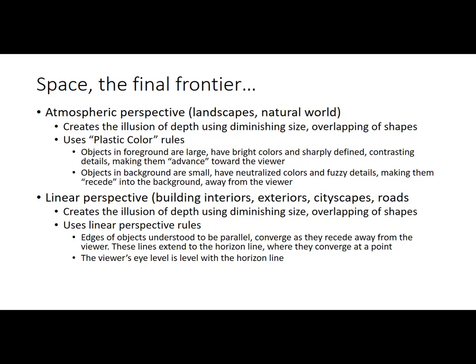In linear perspective, the edges of objects understood to be parallel - like the top and bottom edges of a building - tend to converge as they recede away from the viewer in space. Extended to the background, all the way to the horizon line, these lines converge on a point called a vanishing point. We refer to lines that extend back to the horizon line as orthogonal lines. The viewer's eye level in linear perspective is level with the horizon line, and your position determines whether you're looking down at an object, up at it, or straight at it.